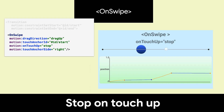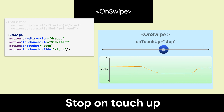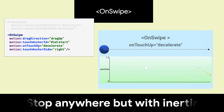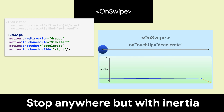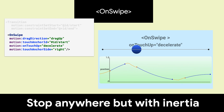OnSwipe can be configured to stop on touch up, as shown here. For some animations, you may want it to decelerate to a stop. The maximum acceleration sets the rate of the stopping.